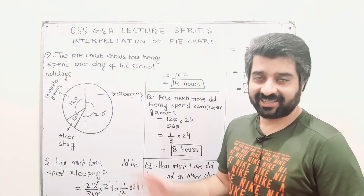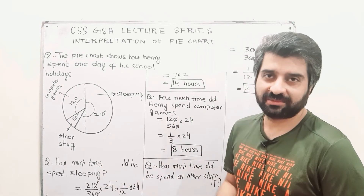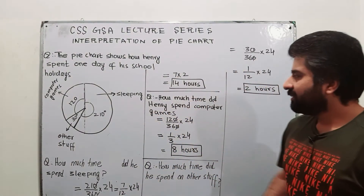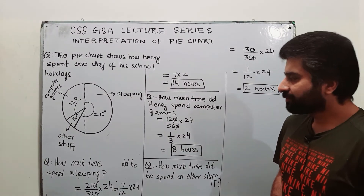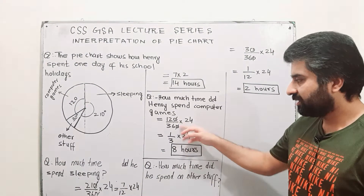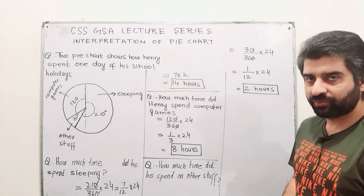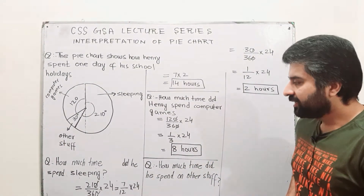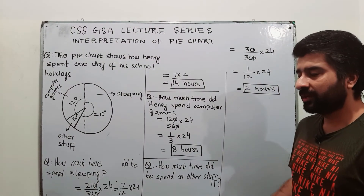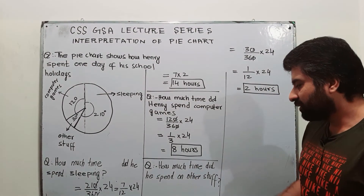That will obviously not be for every day — that will be for one particular day, maybe he was not well. Then, how much time did Henry spend on computer games? The angle for the sector of computer games is 120. Divided by total angle 360, multiplied by 24 hours, you can simplify it to 8 hours for computer games.